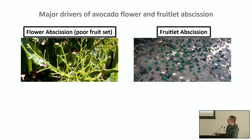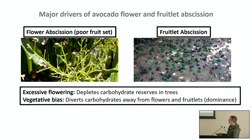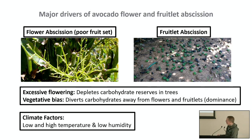The major drivers for avocado flower and fruit abscission are excessive flowering, which depletes carbohydrate reserves required for fruit set and early fruit development, a vegetative bias that diverts carbohydrates away from flowers and fruitlets, and climate factors — low and high temperature as well as low humidity — which can impact these processes negatively.